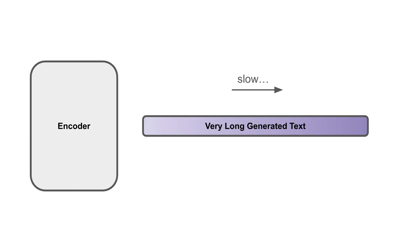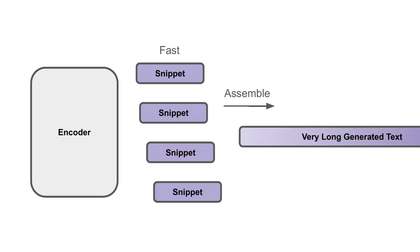A final observation we made is that these models are often used to generate very long text on the decoder side. We can make this faster, but it's still relatively slow to do this in serial. For speech recognition, we often don't need to take into account the whole sequence at once. So we found that we could make this process faster by parallelizing it. In practice, we take 30 seconds of speech as a snippet, use the encoder to decode each of these snippets in parallel, and then reassemble them into very long generated text on the output. This was particularly effective for experiments in longer form speech recognition.